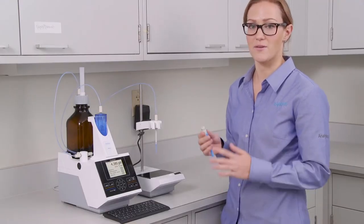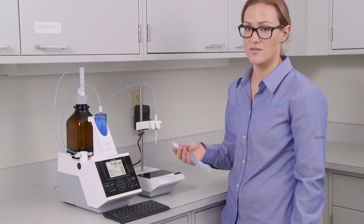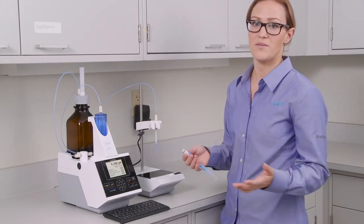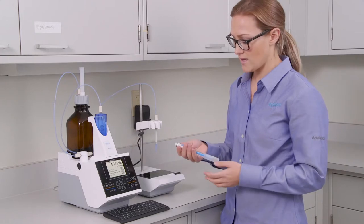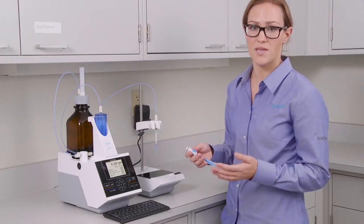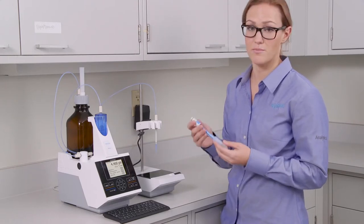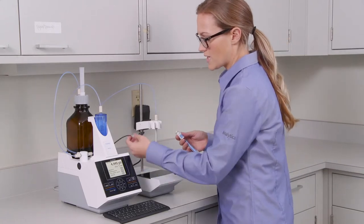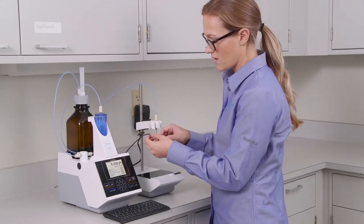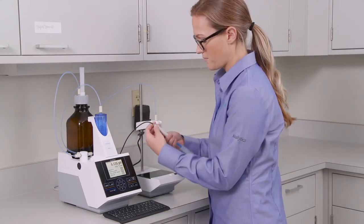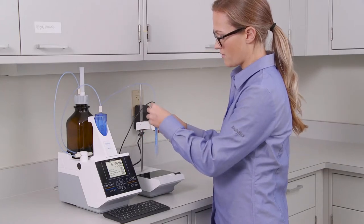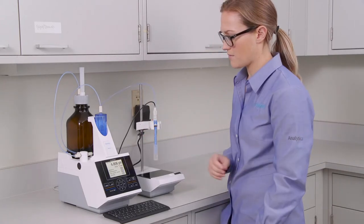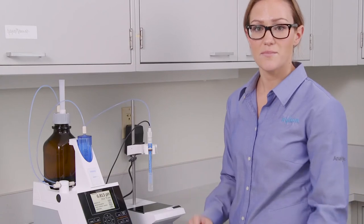The final step to getting your complete titrator set up is your electrode. You may be using a number of electrodes. In this case we're just going to be working with a simple pH combination electrode. This is our blue line 11. You'll take the other end of your electrode cable and just connect it to the top of your probe. You'll take your probe and put it on top of the clamp like so. And it's as simple as that.